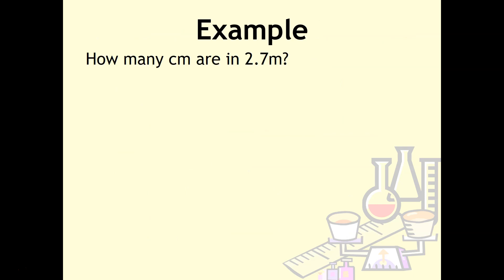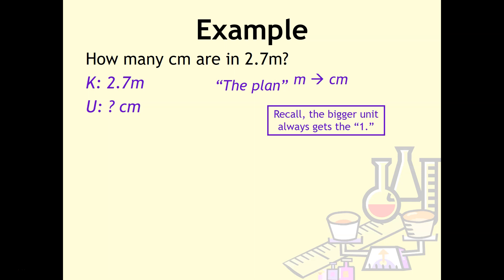Here's an example. We want to know how many centimeters are in 2.7 meters. Following the steps, our known is 2.7 meters, and our unknown is how many centimeters. Next, we write out the plan, which includes the units we're converting from and to. We're going from meters to centimeters. The conversion we know—and remember, we put one with the bigger unit—is that centi means hundredths. So it takes 100 centimeters to equal one meter.